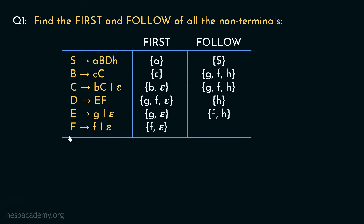Let's now figure out Follow of F. F appears in this production and is followed by nothing — it is the rightmost non-terminal on the right-hand side. So to find Follow of F, we require Follow of D, which is h. Therefore, in Follow of F we will have only the terminal symbol h.